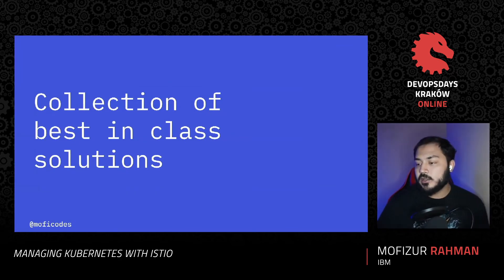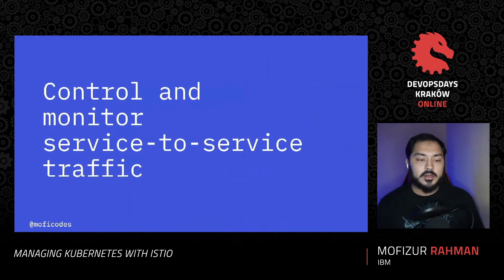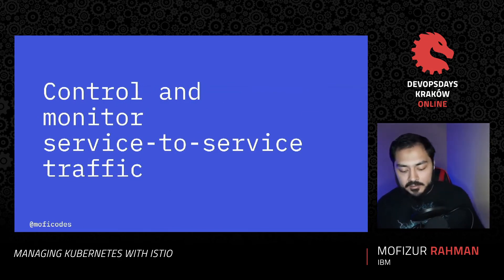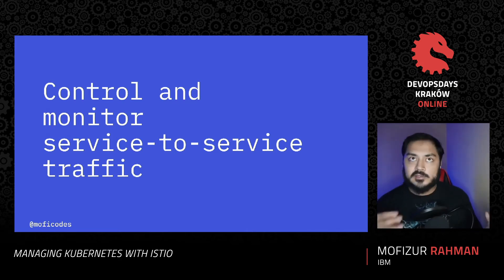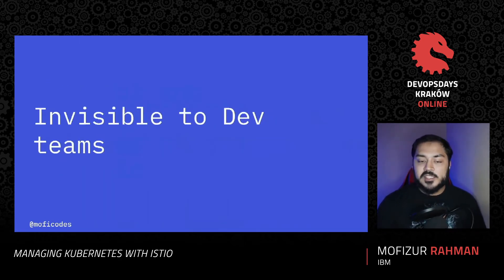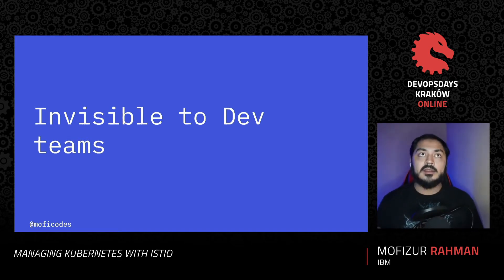A service mesh is a collection of best-in-class solutions that lets you control and monitor service-to-service traffic — that's the official definition. But after about three years of service meshes being around, they've taken on a lot more. The best part about a service mesh is that it is invisible to the development team: your team won't have to do anything different to take advantage of all the features a service mesh provides.